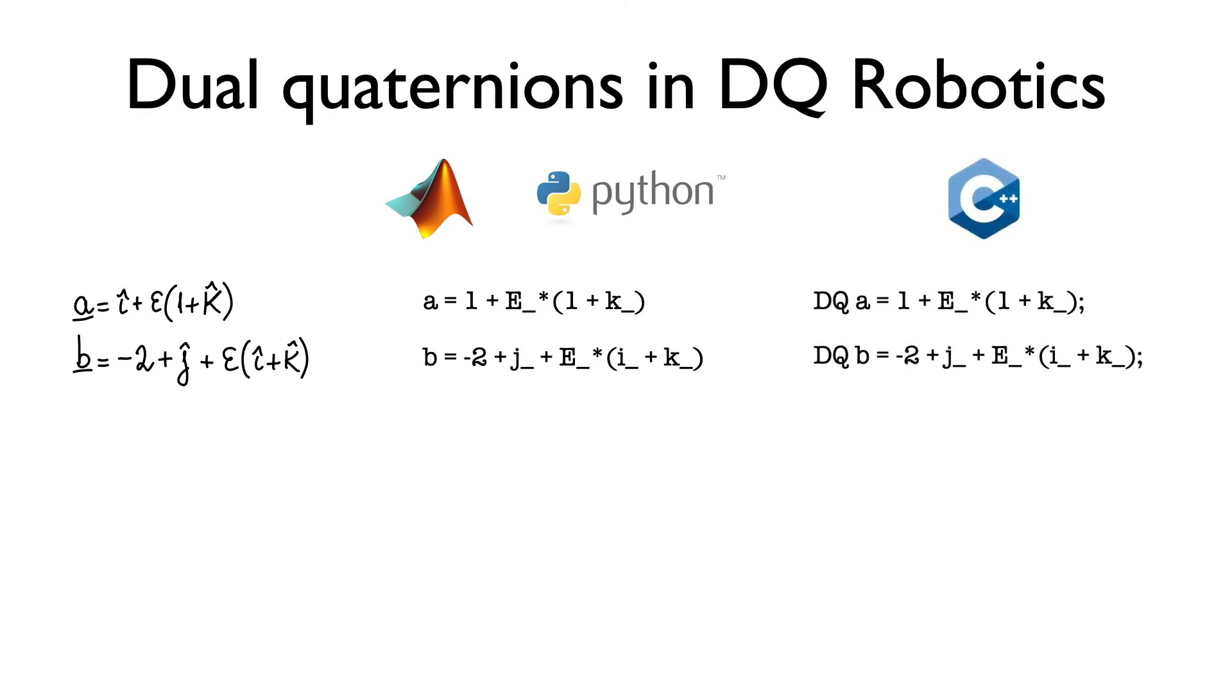In C++, it's almost the same thing, except that we have to explicitly declare the type of A and B, which is a Diki type and, of course, we have to use a semicolon.